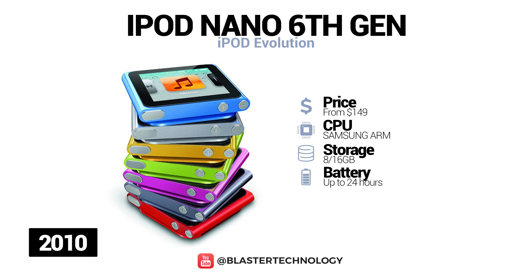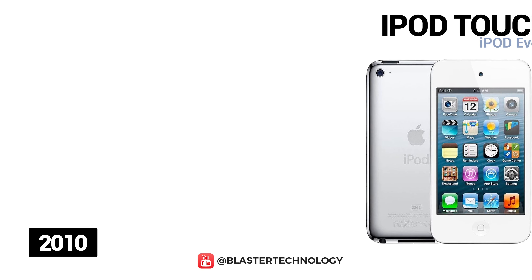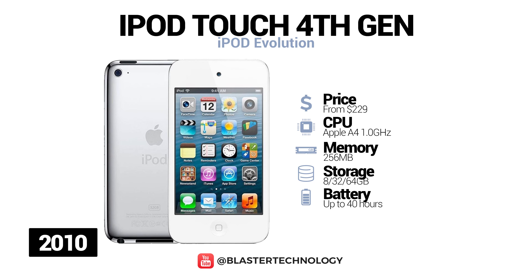The first iPod Nano with a multi-touch screen was the sixth generation, launched in 2010. It could no longer play videos and had no speakers or camera, but had a battery life of 24 hours of audio playback. Also in 2010, the fourth generation iPod Touch — also called the iPod Touch 4G — was launched. It was noted as the first iPod Touch with front and rear cameras, had a retina display, and was thinner and lighter than previous versions.